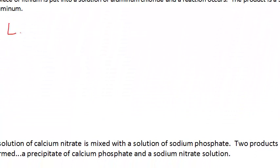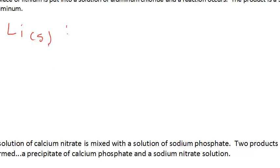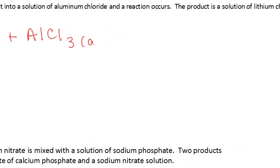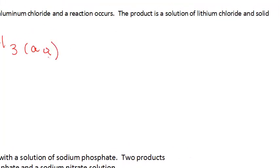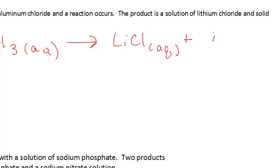So I'm going to go ahead and start with my lithium, and it's telling me that it's in its solid state, so I'm going to put in (s) for solid. And then aluminum chloride — remember aluminum is the plus-three ion, so my formula is AlCl₃, and it says it's a solution, so I'm going to use (aq) for aqueous. And then it says those two reactants are going to form the products of a solution of lithium chloride — again, it's a solution — and then some solid aluminum.